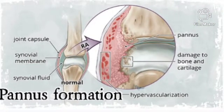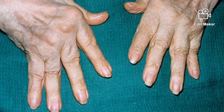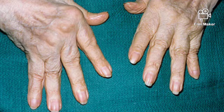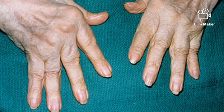This causes bone erosion, cartilage destruction, and ligament damage. The destruction makes ligaments and the joint capsule — a fibrous connective tissue that forms a sleeve around the joints — less able to support the joint. This causes joints to lose their shape and alignment, resulting in joint dysfunction, pain, and visible abnormalities.